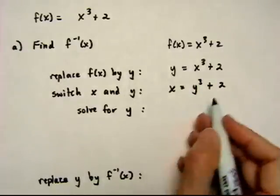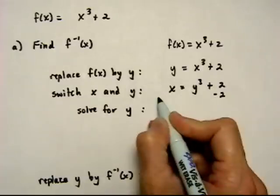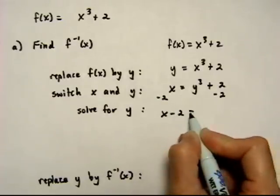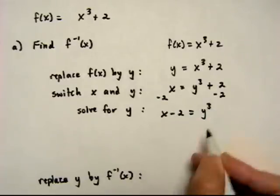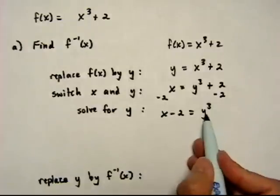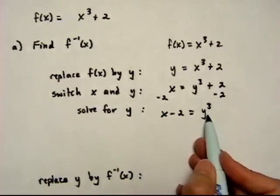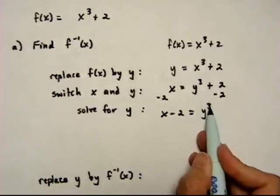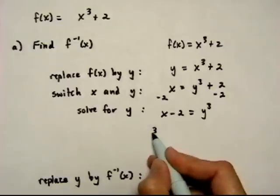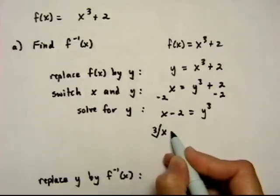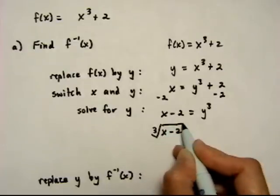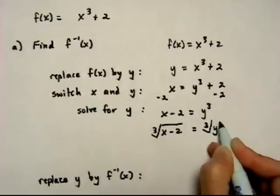Solve for y. So first we'll subtract 2 from both sides. That gives us x minus 2 is equal to y cubed. And now we have y cubed, but we want just y. So to undo the cubing, we need to do a cube root both sides to balance it out.